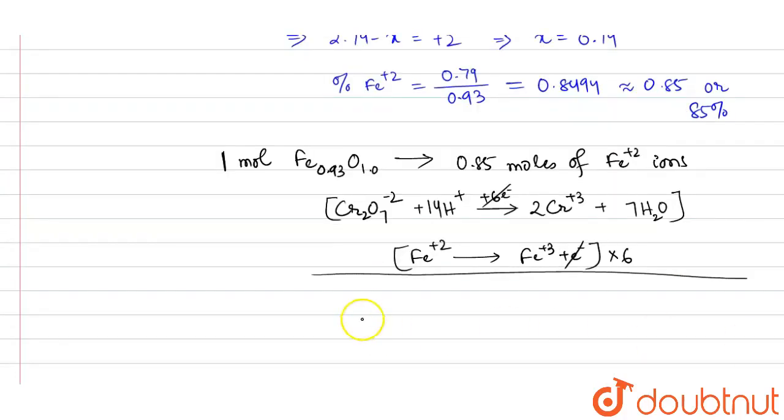And if we add it up, the net reaction will be Cr₂O₇²⁻ plus 14 H⁺ plus 6 Fe²⁺ gives 2 Cr³⁺ plus 6 Fe³⁺ plus 7 water.